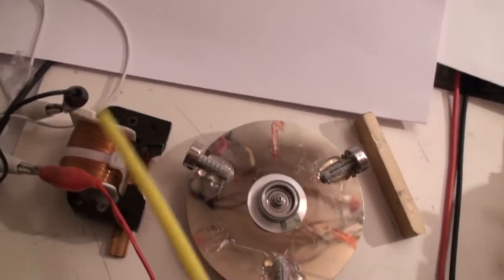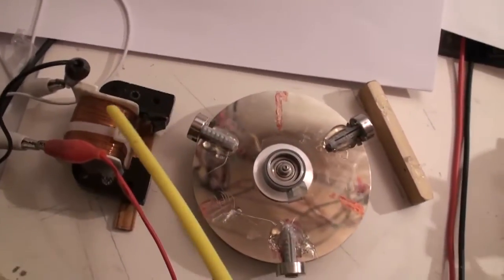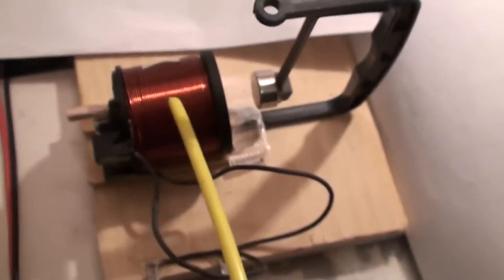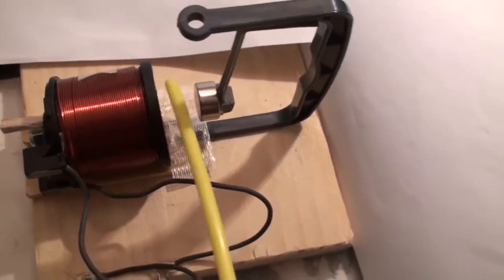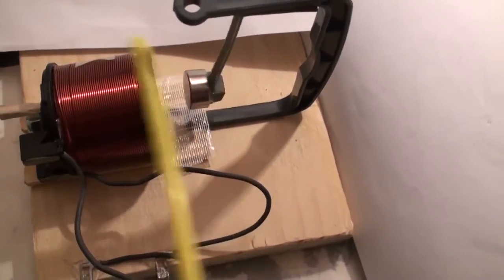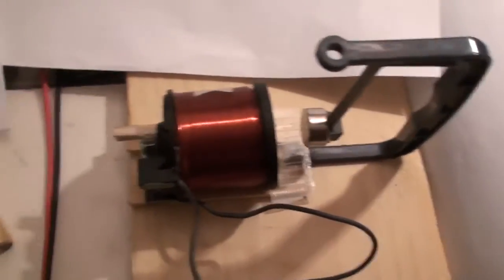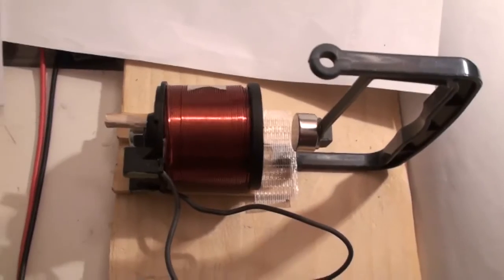So this assistant coil becomes the main coil, and this main coil, old main coil, can now be used for making other free lunch work. I'm not sure that you understood. I'll show you.